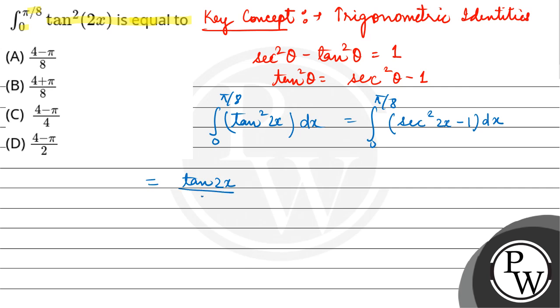Or 2x differentiation gives 2, so divide by 2. Limit 0 to pi by 8, minus x, limit 0 to pi by 8.